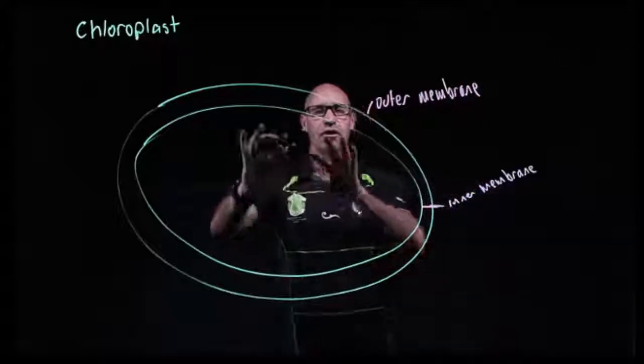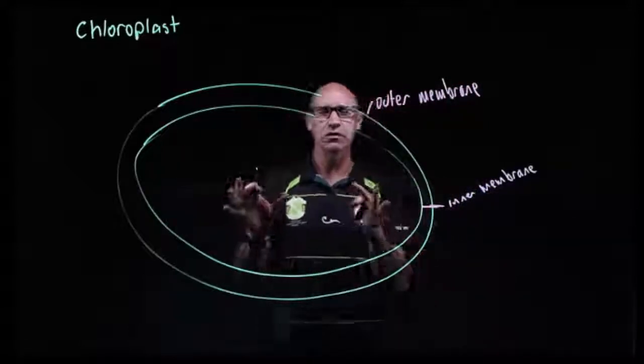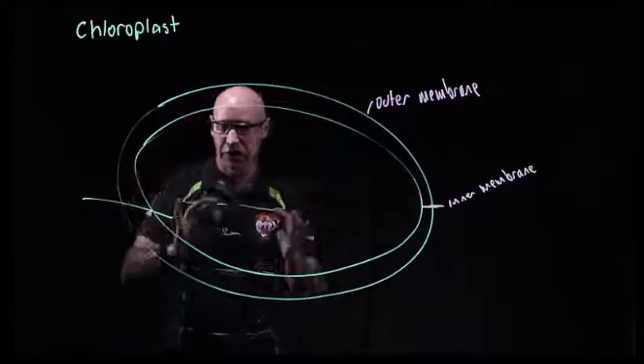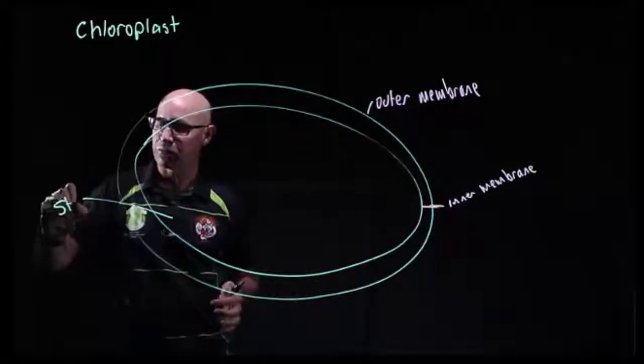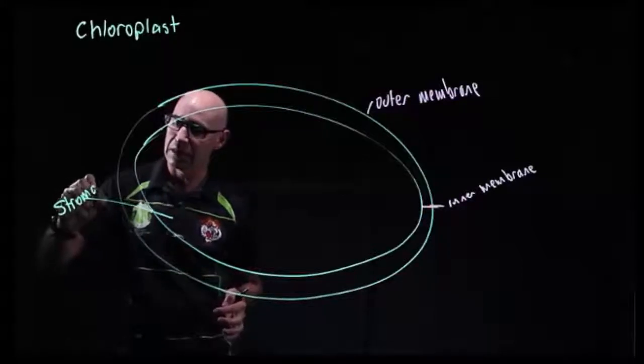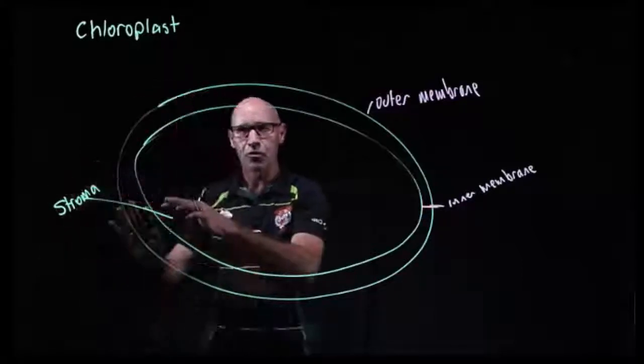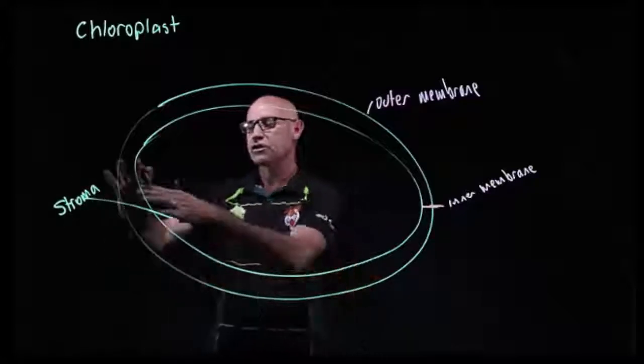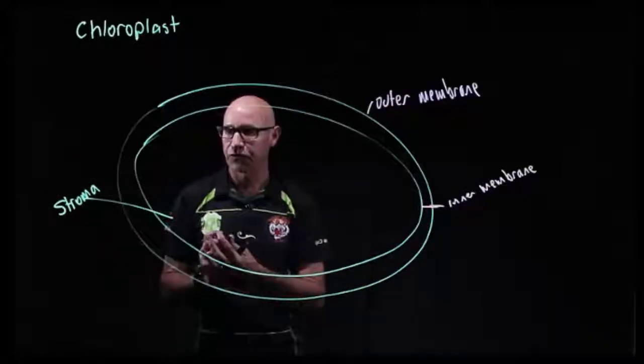Now inside that, there's a liquid, watery environment, and that liquid or watery environment is called the stroma, S-T-R-O-M-A. That's important because parts of the photosynthesis reactions actually occur in that liquid called the stroma.